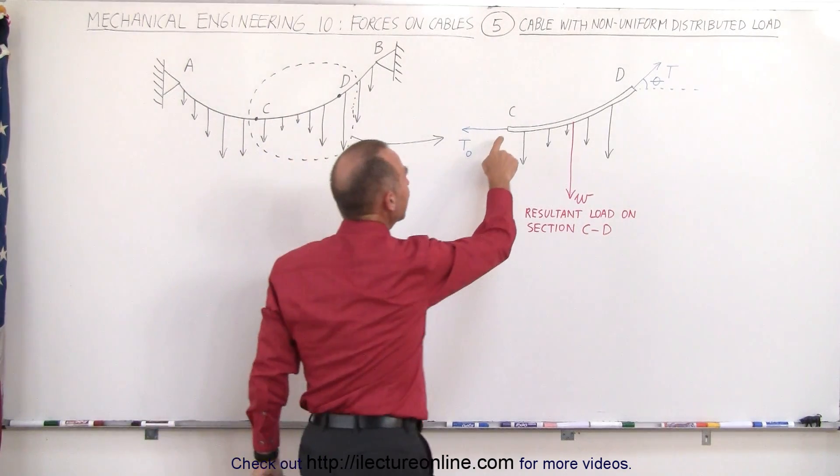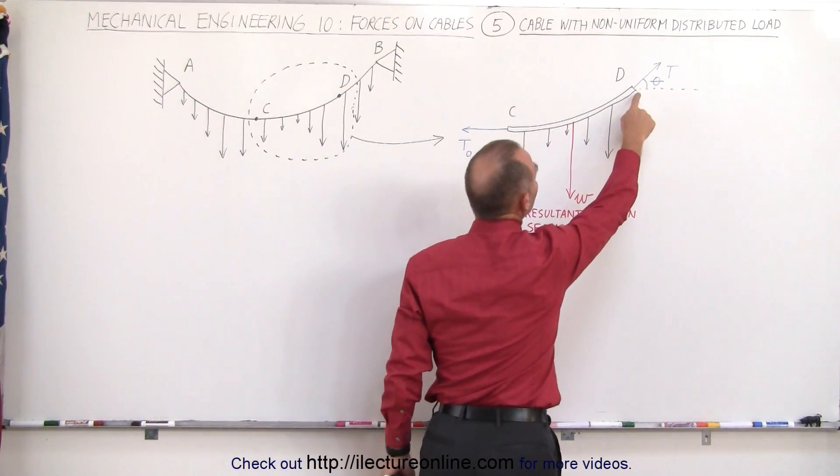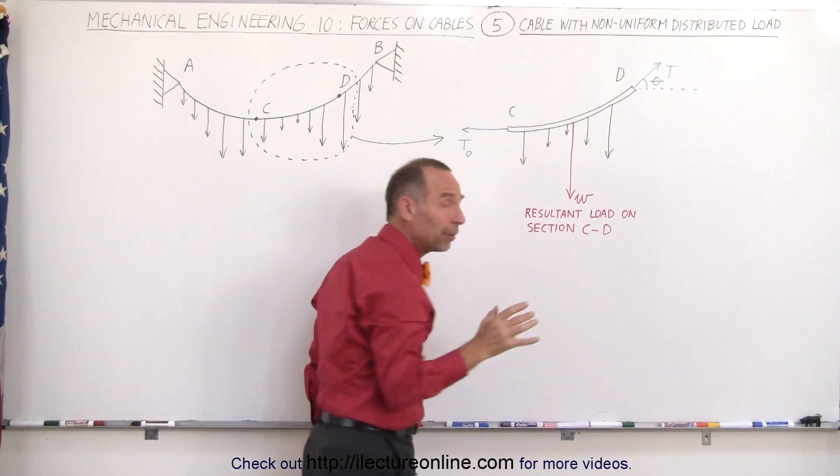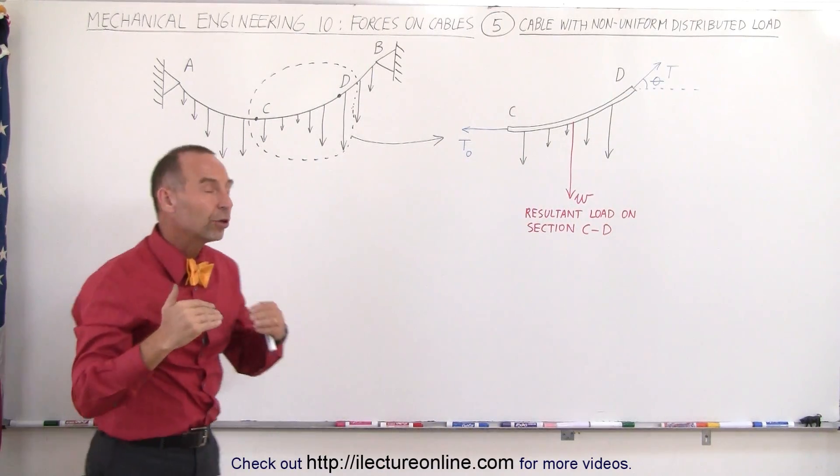So we'll take that section right here and move it over to the right. So this is our section of the cable from C to D. C is the lowest point in the cable, D can be any other point on the cable. The tension here will be different than the tension there.